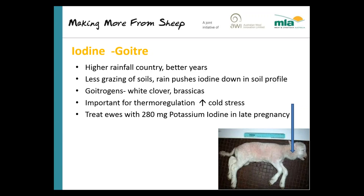Goiter is reasonably easy to overcome — simply treat ewes with a potassium iodine solution in the fourth month of pregnancy. The difficulty is the sporadic nature of occurrence — knowing whether you need to treat. Generally, most producers would see the first one or two lambs born with goiter, then quickly drench the rest of the sheep with potassium iodine, which usually overcomes the problem reasonably quickly.